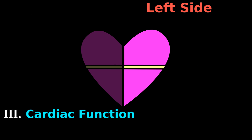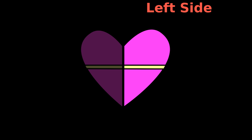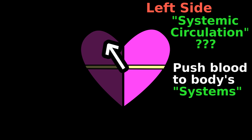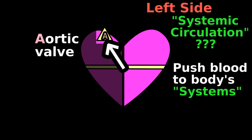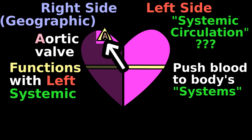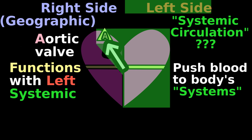Speaking of the left heart's function, some say that the left side of the heart is the systemic circulation, because the left ventricle pushes blood to the body's systems. However, while the aortic valve is on the geographic right side of the heart, it functions as part of the left side systemic circulation.